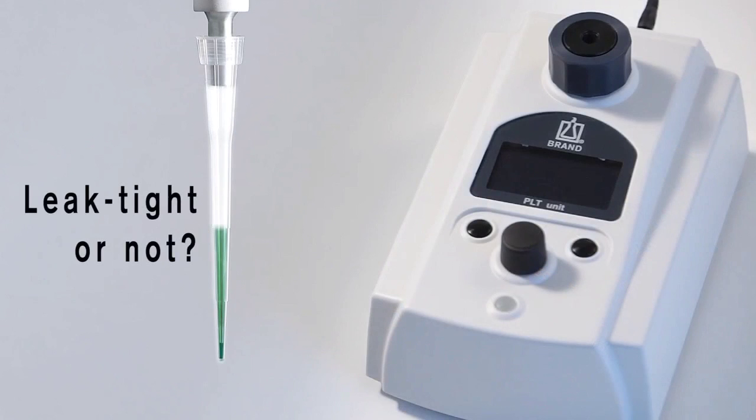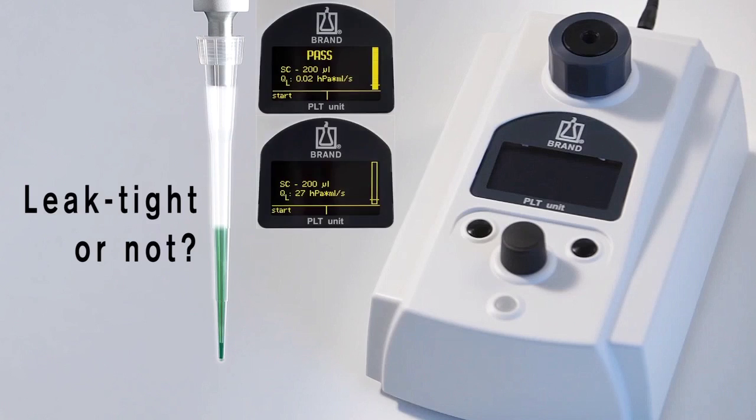Leaks are the most common cause of inaccuracy in piston-operated pipettes. When looking at a pipette that is not dripping, it is difficult to judge whether it is really leak-tight or not. The PLT unit from Brandt finds even the smallest leaks in just seconds and compares the missing volume with the tolerances in the ISO standard.